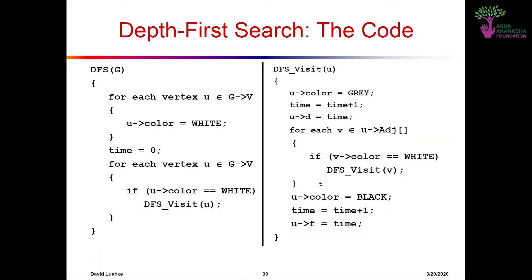Regarding color coding: vertices are initially colored white when they have not been visited. We color a node gray when we discover it, and finally black when we finish our visit. When a node is in the stack it remains gray, and when it is popped out of the stack it becomes black.